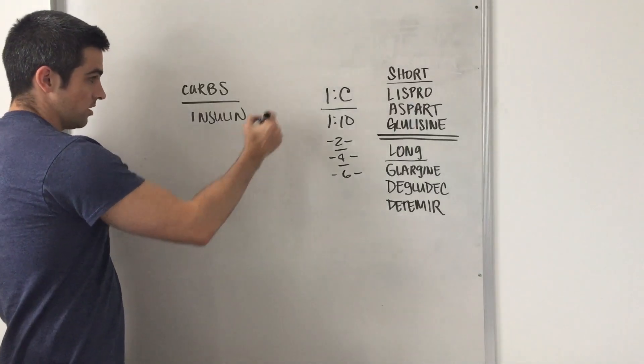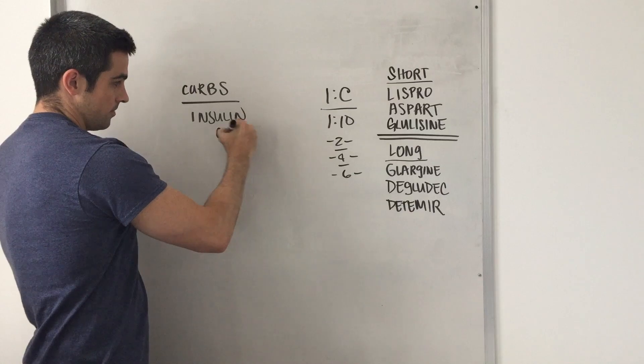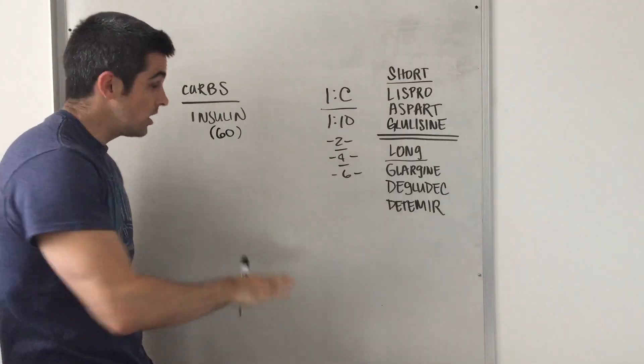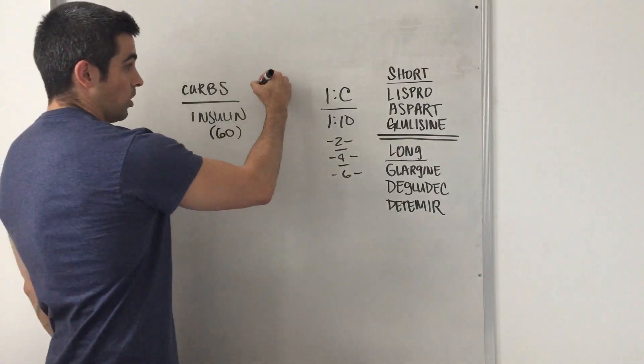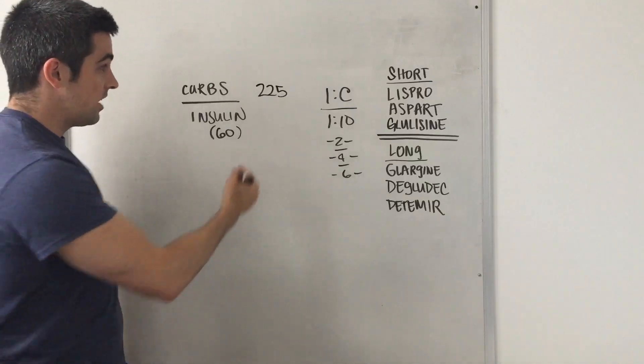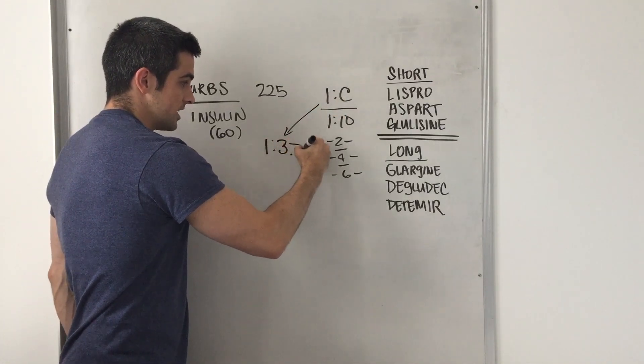If we were giving 20 units of insulin for breakfast, lunch, and dinner, this would be 60 total. Not counting the 24 that you would give of glargine at night, but this would be 60. And if they were on that 225 regular diet, then their insulin to carb ratio would be 1 to 3.75.